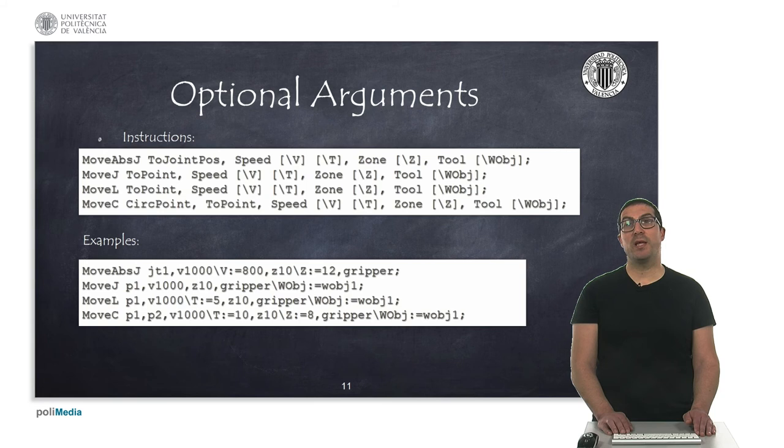An important argument is the working object, or wobj, which is the name of a reference frame that allows the trajectory to be readjusted based on that working object frame. So if you modify the work object reference frame, the trajectory will be recalculated to be able to work in a different region of space.